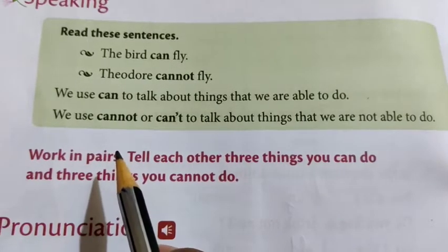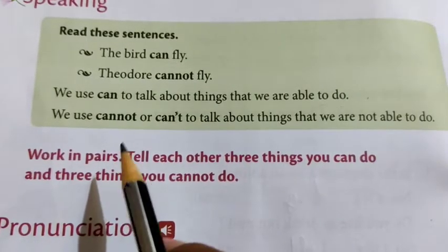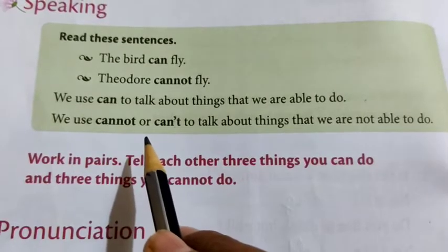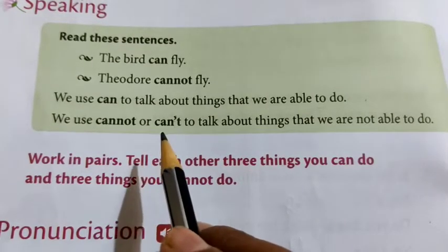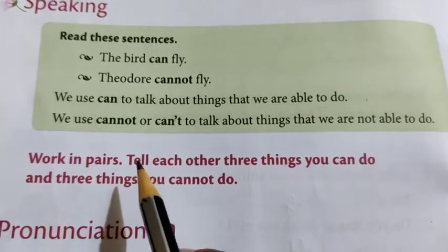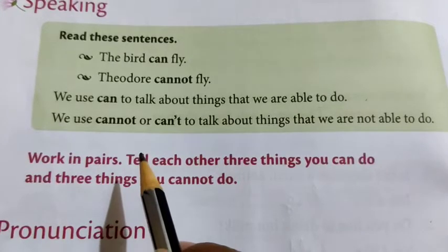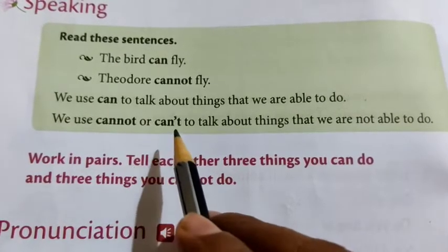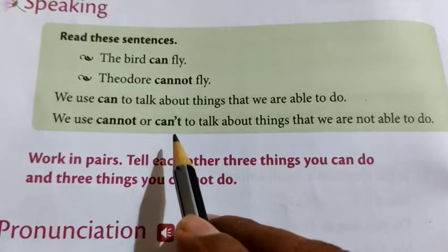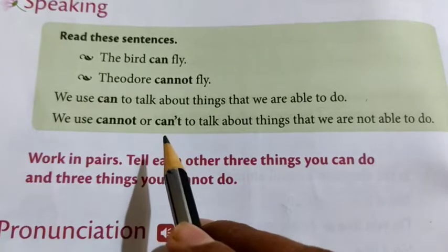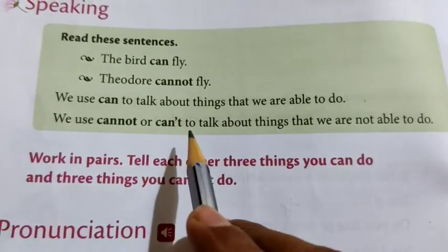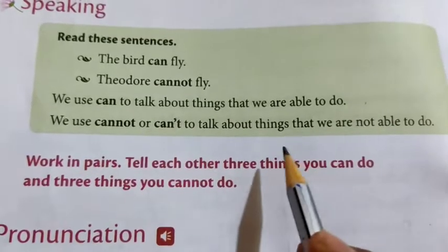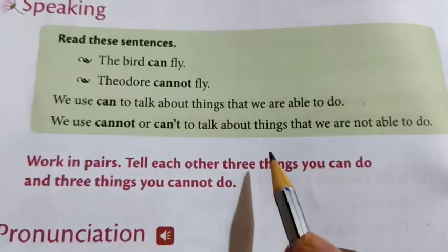For example, I can cook — I can say that because I can cook. But you are small kids, you cannot cook. I used 'can' because I am able to do that work, but you are not able to, so you cannot cook. And I can drive — you cannot drive.